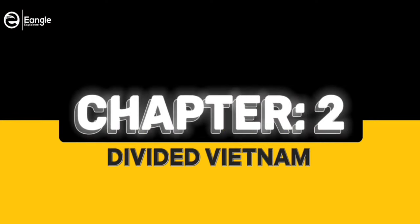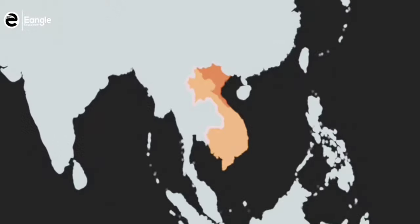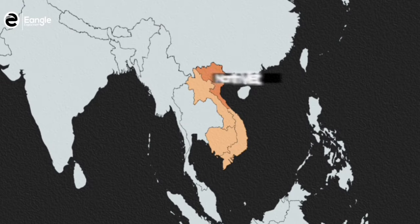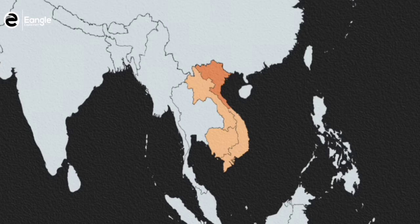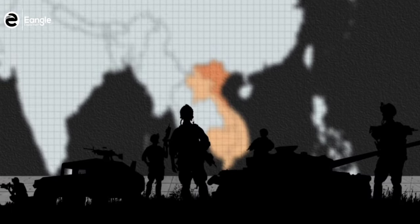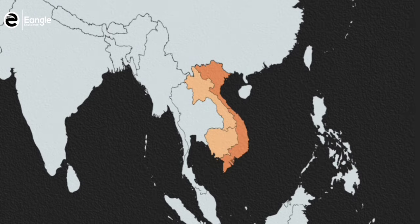The Geneva Accords of 1954 divided Vietnam into two separate countries: North Vietnam and South Vietnam. North Vietnam was ruled by the Communist Party, while South Vietnam was governed by a pro-Western regime that had close ties to the United States. In the years that followed, a number of factors contributed to the escalation of hostilities between North and South Vietnam, as communist forces began to mount incursions into the South in an effort to reunify the country under communist rule.